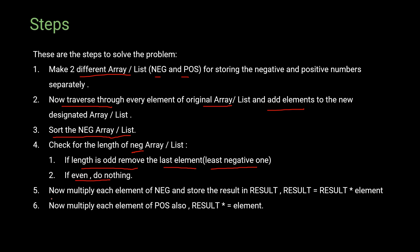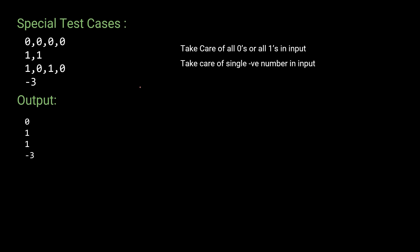Step five and six: multiply each element from both the negative and positive lists and store the result in a variable called 'result.' We use a loop to iterate through both lists and multiply. There are some special test cases I found while solving; it took me a while to identify them.